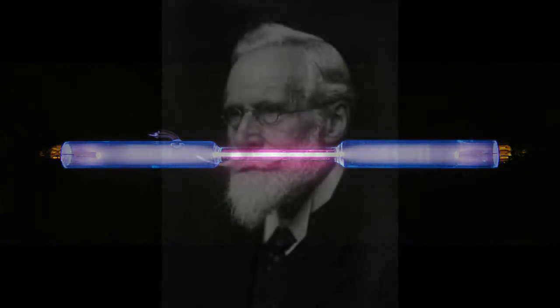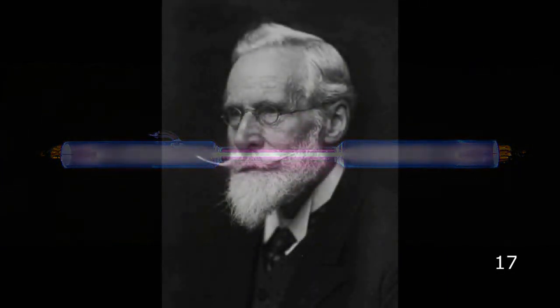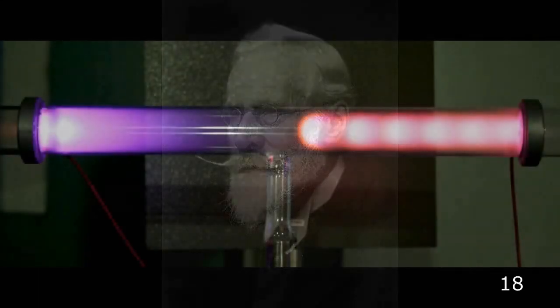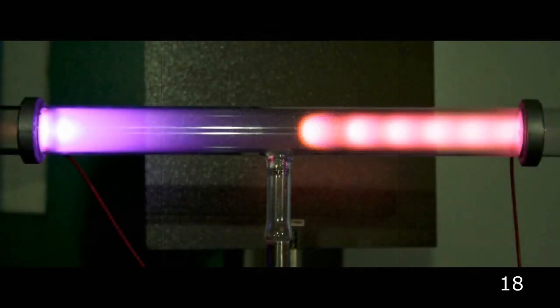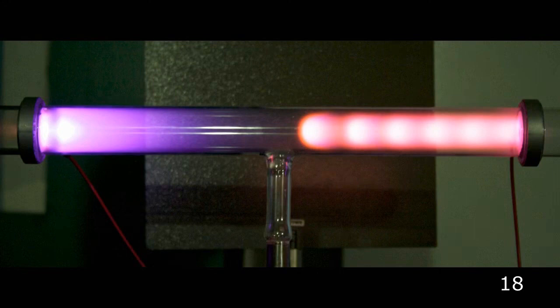And it was taken a step further by this man, a man named William Crooks, who with better pumps was able to produce even lower pressures. And in doing so, he discovered that the glow started to disappear. And the more he pumped the gas out, the darker the tube became starting from the cathode, the negative electrode, and working its way to the positive electrode until there was no more glow at all. But he did notice something very interesting.